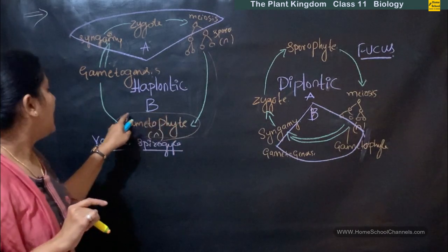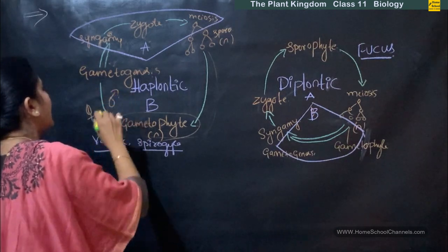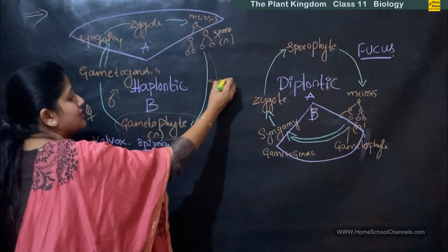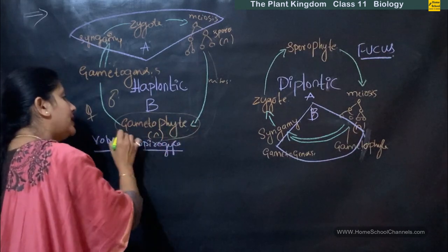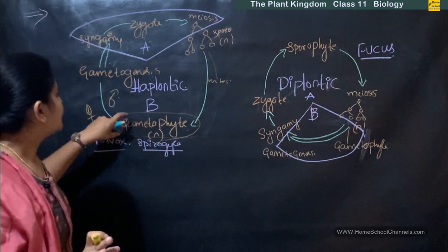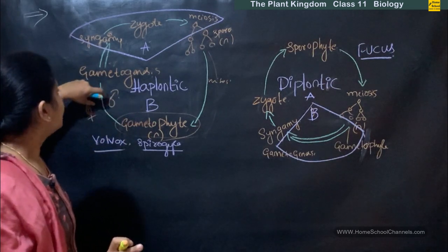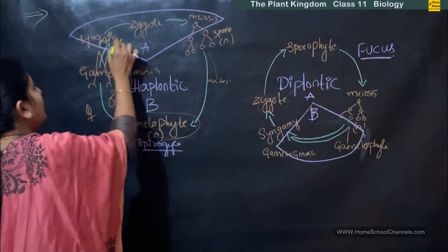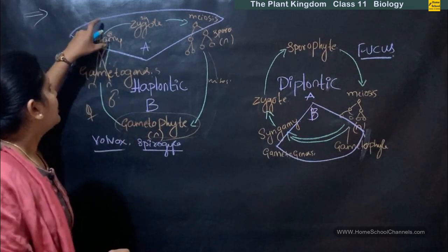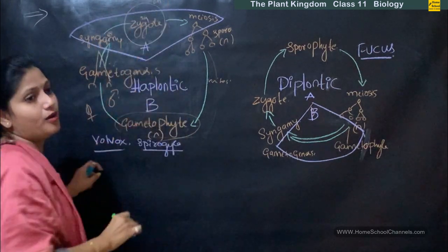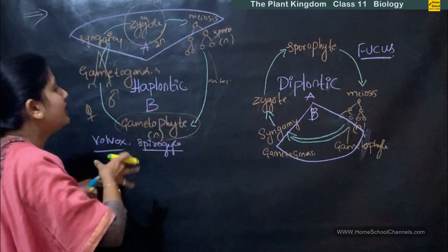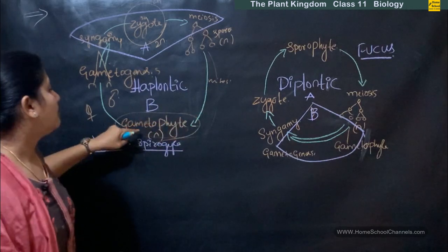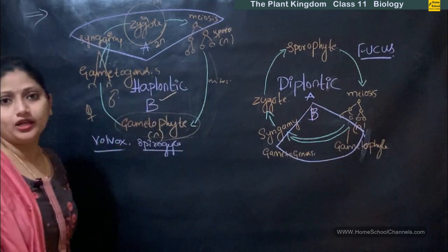From this gametophyte, again the female and male gametes are formed. Since the gametophyte is formed by the spores which are haploid and it undergoes mitosis to form the main plant body, the main plant body is also haploid in nature. The formation of gametes is called gametogenesis. These haploid gametes form a diploid zygote. Only the zygote is diploid — everything else is haploid here. So the haploid stage is quite dominant, hence we call this life cycle the haplontic life cycle.